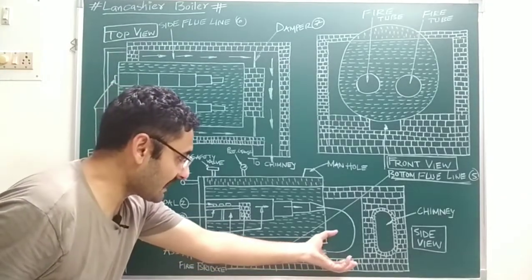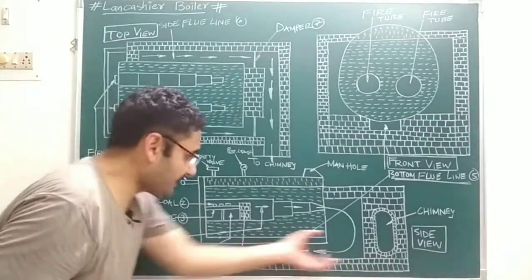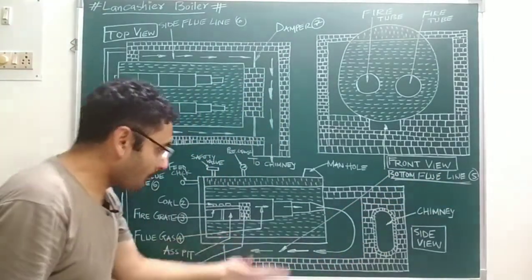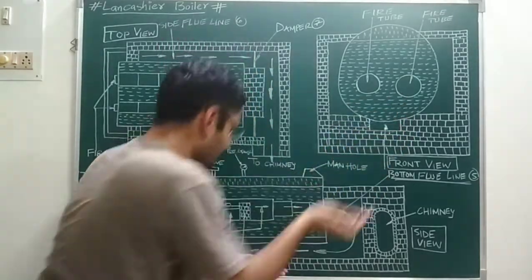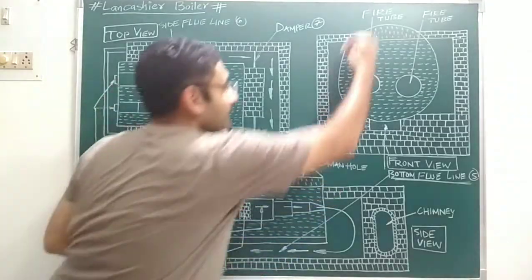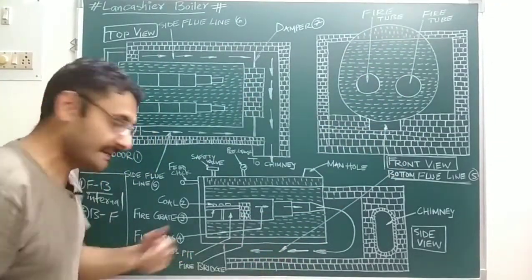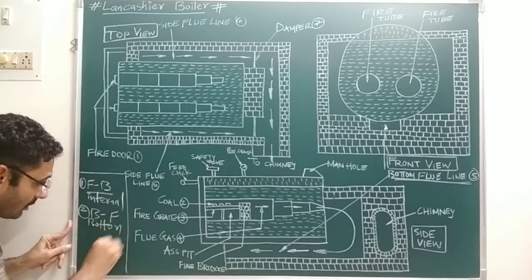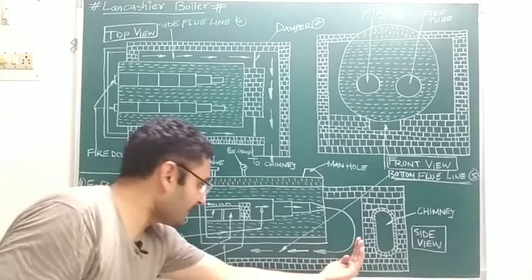When the flue gases travel from back to front through the bottom flue line, they heat the bottom portion of the shell. So the second stage heats the bottom portion of the shell.